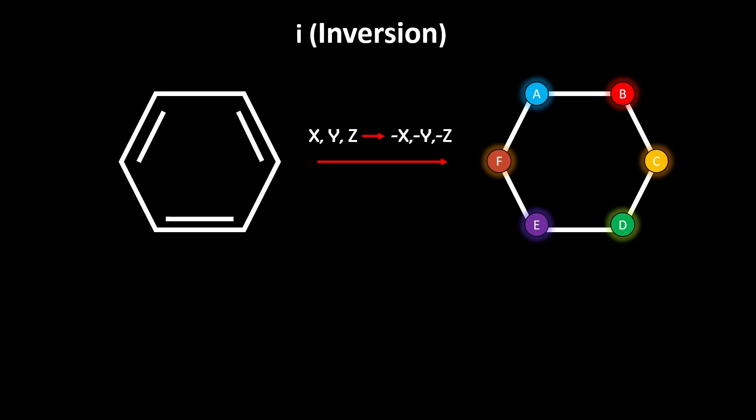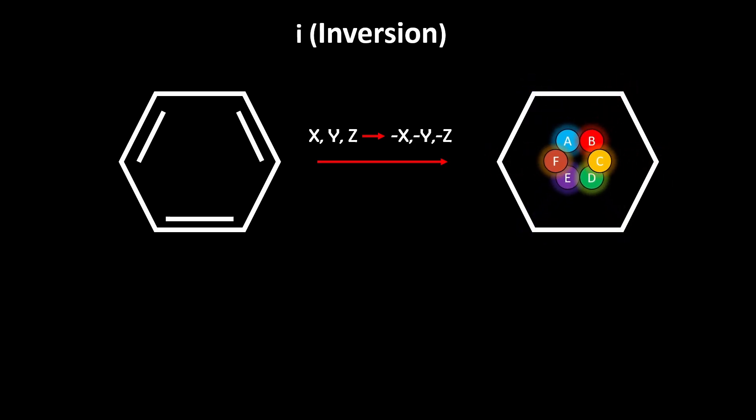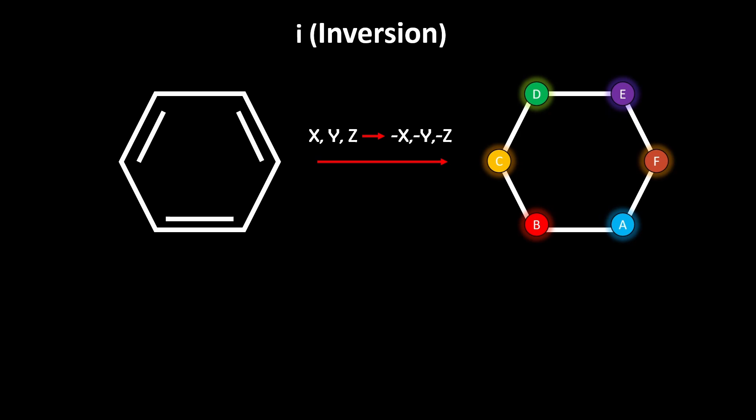Inversion. Benzene has an inversion center right in the middle of the ring. If you invert every atom through this point, meaning you take each atom at x, y, z, and move them to negative x, negative y, and negative z, you end up with the same molecule.